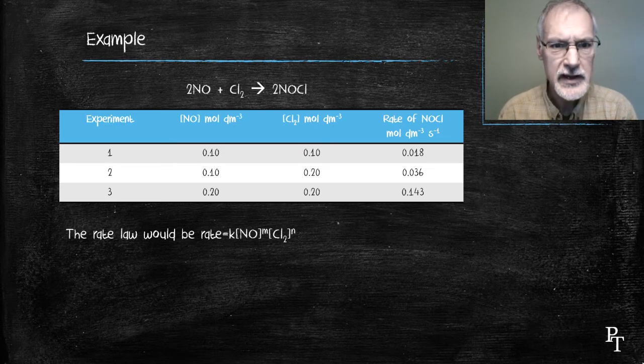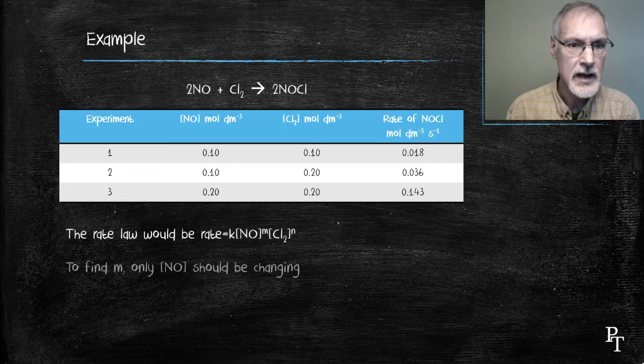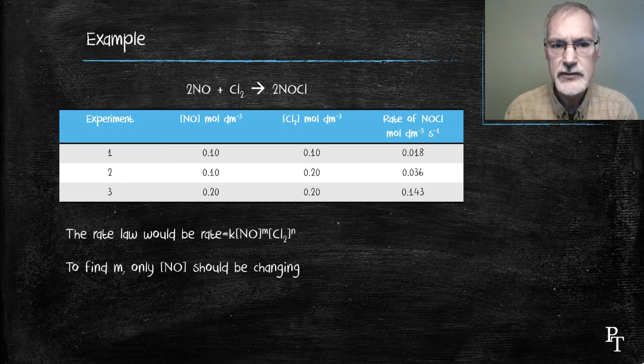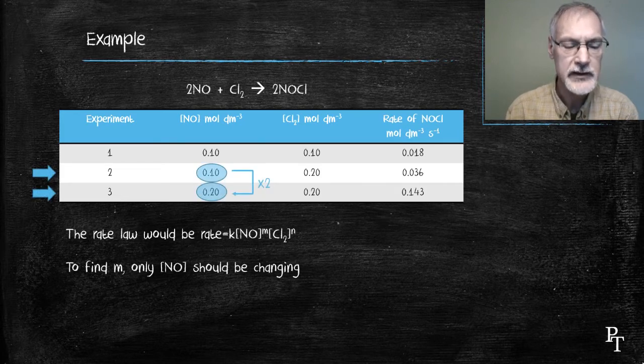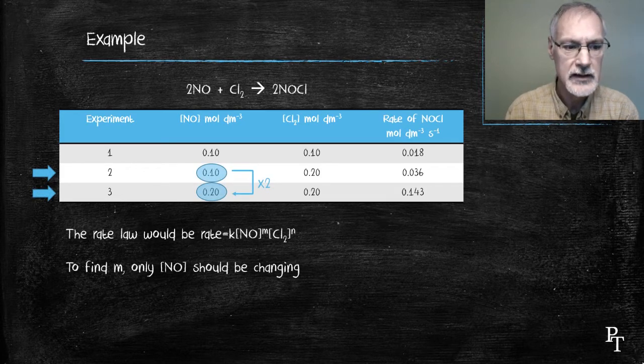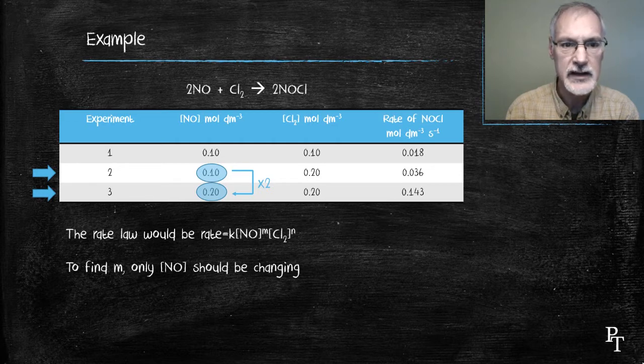If I want to determine the exponent for the nitrogen oxide, or M, I only want the nitrogen oxide chemical changing its concentration. From my experimental data, that would mean I would consider runs 2 and 3, because in those, the chlorine has remained constant.